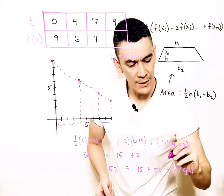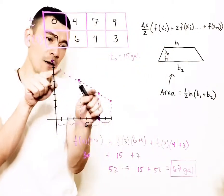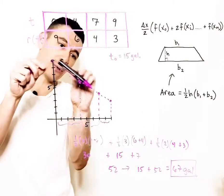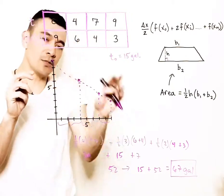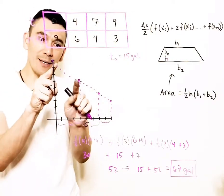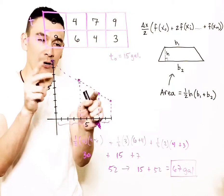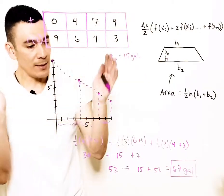One last remark before I conclude. These points, are they collinear? If these points were collinear, then you could have treated this as one large trapezoid, but I don't know if they're collinear or not. You would have to examine the slope between these points, but you don't have to do any of that.